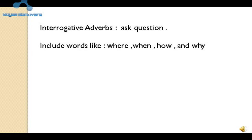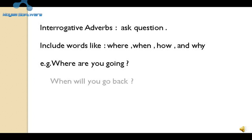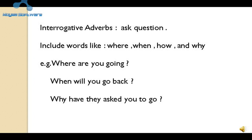Adverbs की एक आखरी important type है — interrogative adverbs. यह बहुत आसान है पहचानना — इनका काम ही है सवाल पूछना। These adverbs are used to ask questions. इसमें where, when, how and why — इन चार अलग-अलग interrogative adverbs का प्रयोग होता है। For example: 'Where are you going?' 'When will you go back?' 'Why have they asked you to go?' 'How did you do it?'